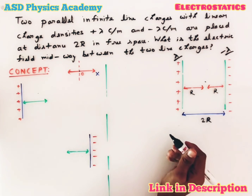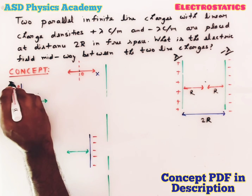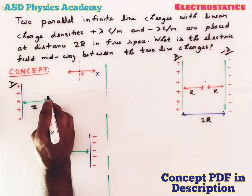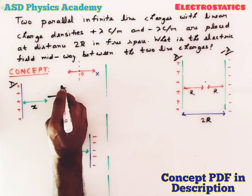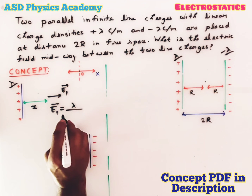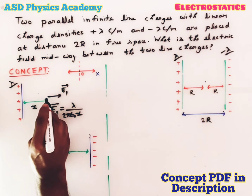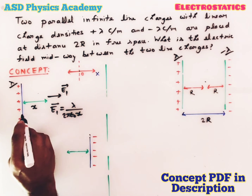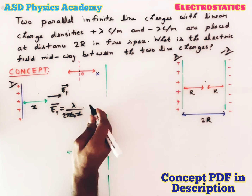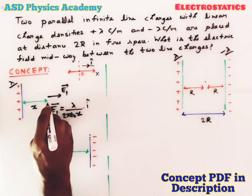The concept is: whenever an infinite line charge has positive charge density lambda, then at a distance x the direction of the electric field will always be away from the positive line charge, and its value in vector form is given by lambda divided by 2 pi epsilon-naught x, where x is the distance of the point from the line charge. The direction is along the positive x direction, so we multiply by i-cap.